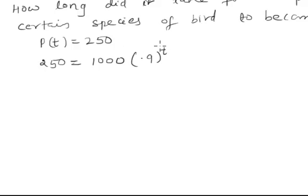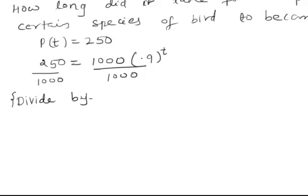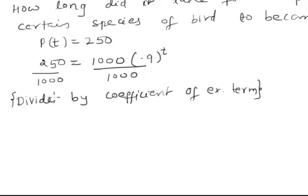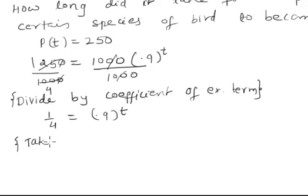To make it linear we have to use logarithm, but before that we need to eliminate the 1000. To eliminate 1000 we divide both sides by 1000. So the first step is: divide by the coefficient of the exponential term. You are left with 1/4 on one side — since 250 divided by 1000 is 0.25 or 1/4 — and 0.9 to the T on the other. The second step: take log of both sides.